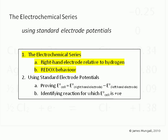Following this will be a tutorial on proving E cell is E of a right-hand electrode minus left-hand electrode, and then lastly identifying reactions for which E cell is positive.